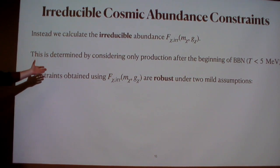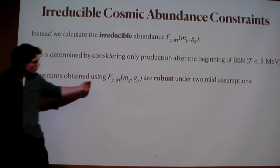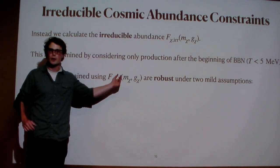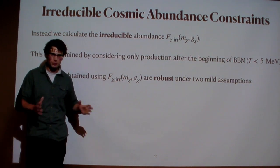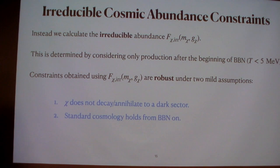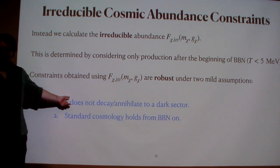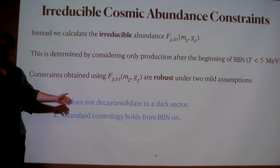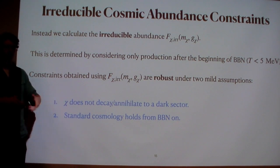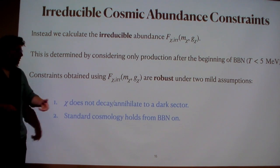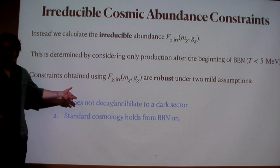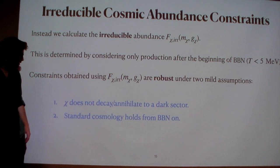Any constraints obtained using this irreducible abundance will be completely robust to modifications of cosmological history before BBN under two mild assumptions: first, that chi does not decay or annihilate into a dark sector. For an axion this is almost trivial because any interaction should couple like 1 over f-A — the same coupling I'm using to constrain this — and the axion is generally very long-lived. For something like sterile neutrinos or a dark photon, this would be a relatively moderate assumption, since a dark photon could decay into a dark sector and disappear completely.